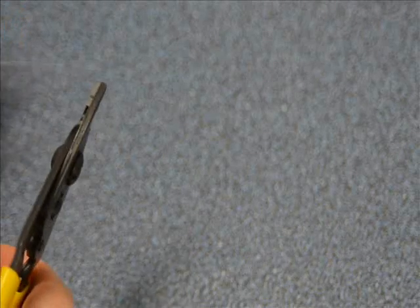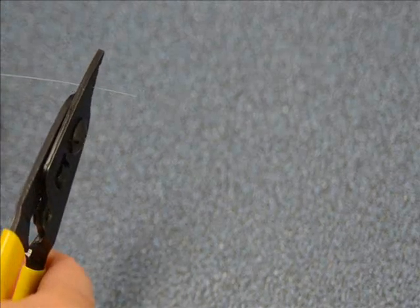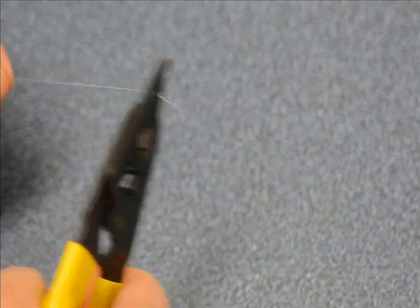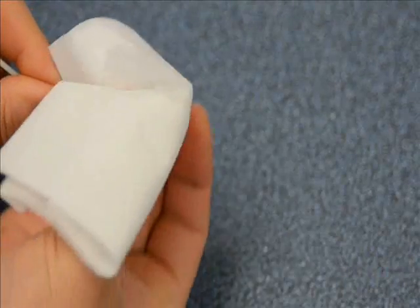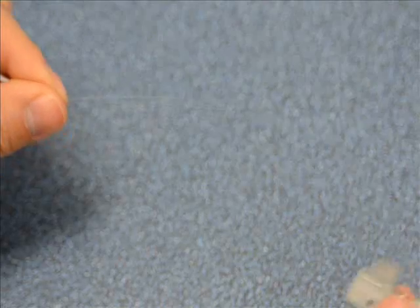The first thing we do is take the unterminated fiber and strip off approximately one inch or about two centimeters of the buffer. You moisten some paper and wipe off the fiber, and we're ready to put it in.